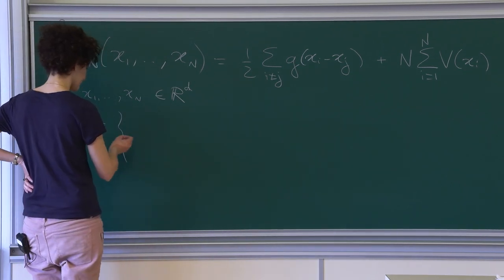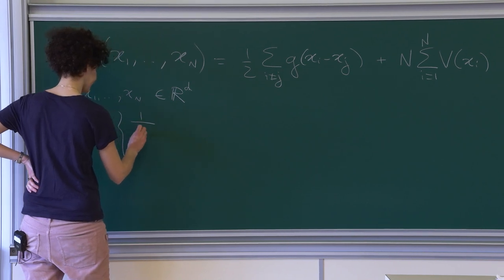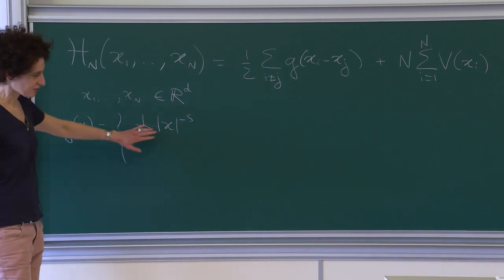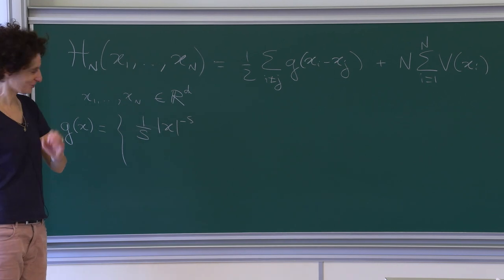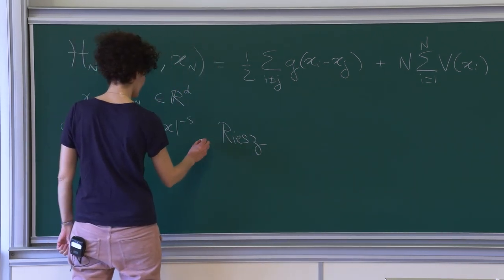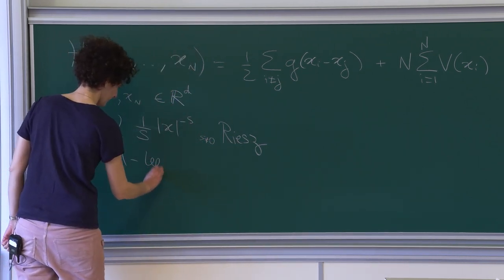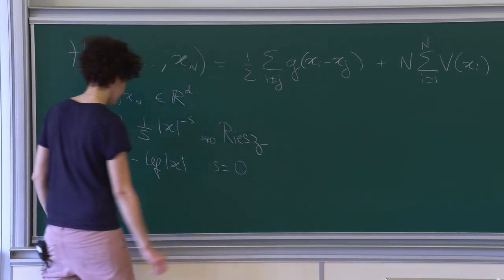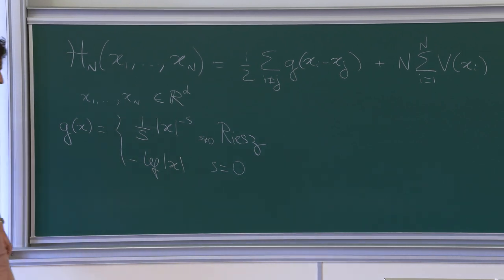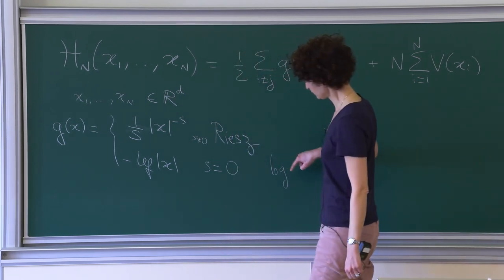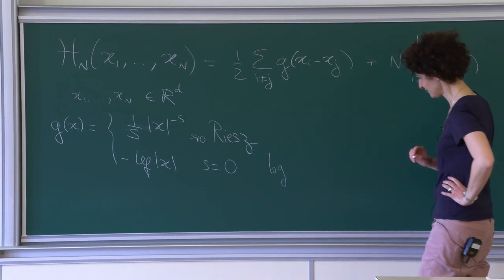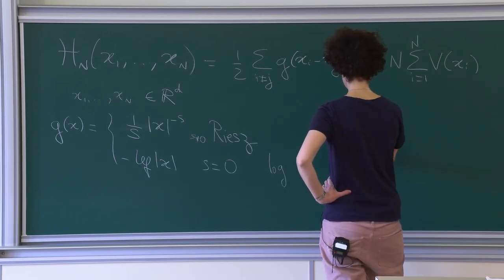For the interaction kernel, we take a very specific form: 1 over |x|^s. I think of s as positive, though it could sometimes be negative. This is a singular kernel we call a Riesz kernel. Formally when s equals zero, you take the logarithmic interaction, which can be seen as a limit as s goes to zero. Both cases are grouped under the term Riesz interactions.